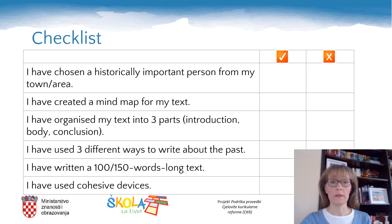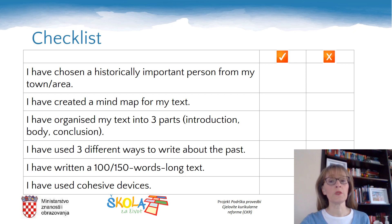We've come to the end. The only thing left for you to do is to go through this checklist and assess your writing. Have you chosen a historical figure from your area? Have you created a mind map? Have you organized your text into three parts? Have you used three different ways to write about the past? Is your text between 100 and 150 words long? And have you used linking words? I hope you have done all these things. This is all for today — goodbye till next time.